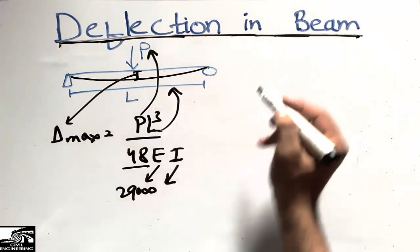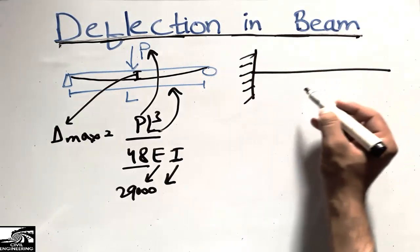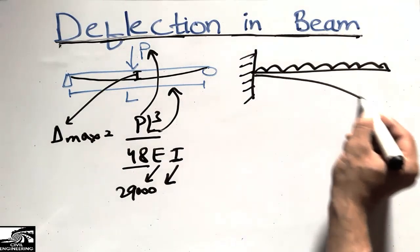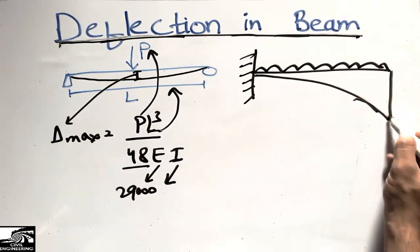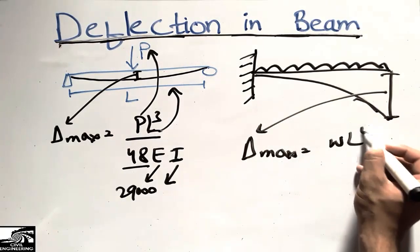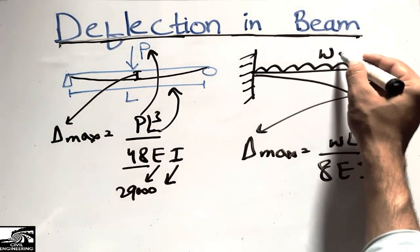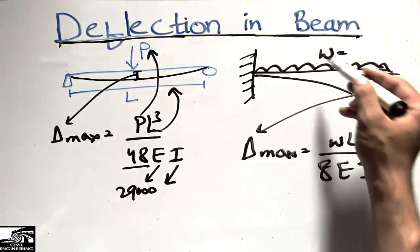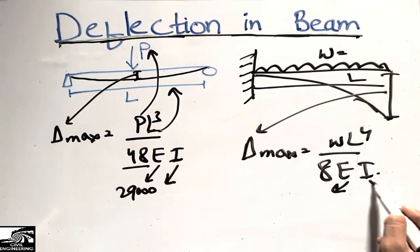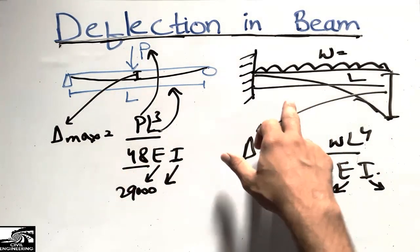For a cantilever beam with a uniformly distributed load, the beam deforms with maximum deflection at the free end. The maximum deflection formula is: delta_max = WL⁴ / (8 × E × I), where W is the unit load per length, L is the beam length, E is the modulus of elasticity, and I is the moment of inertia of the section.